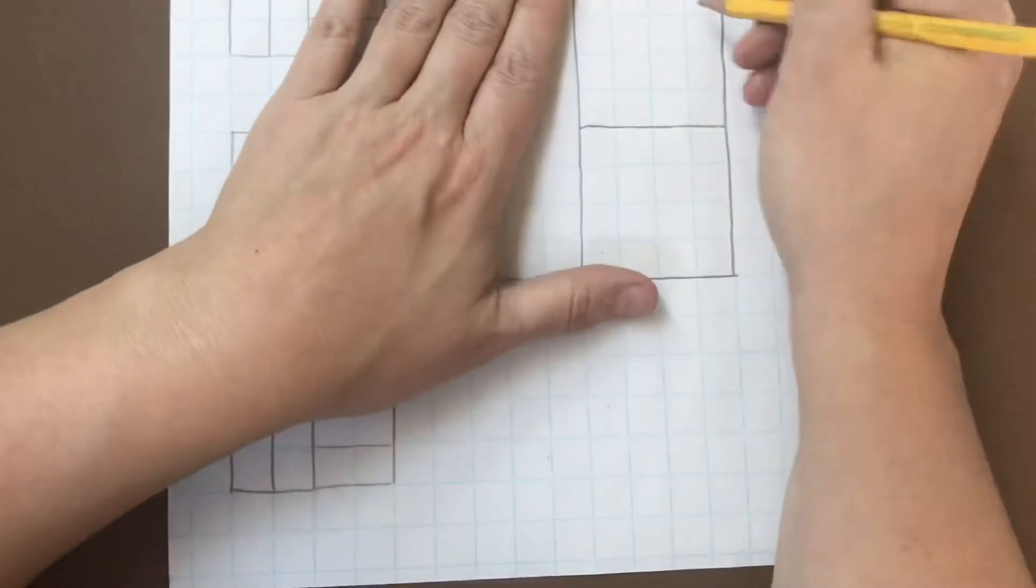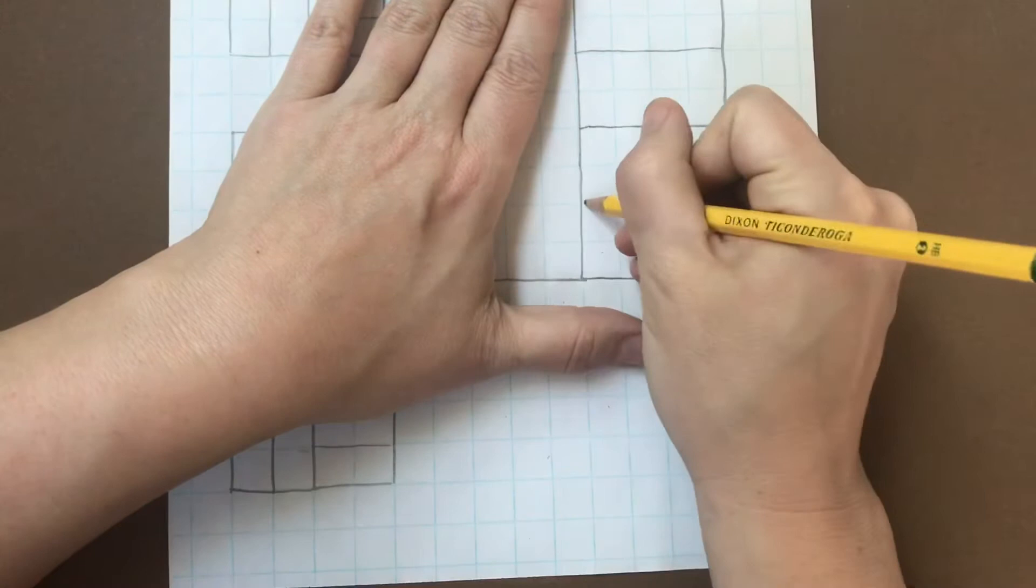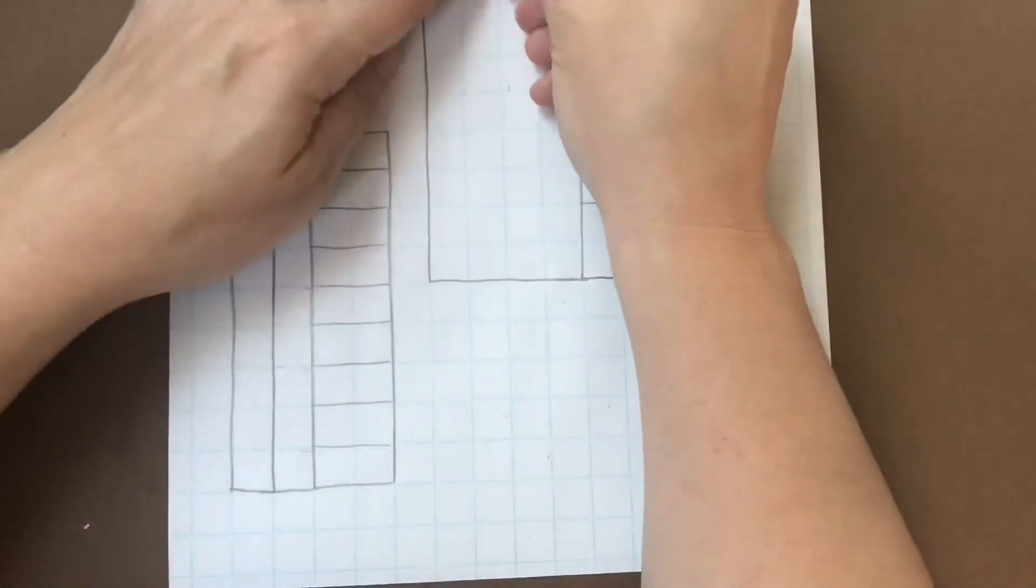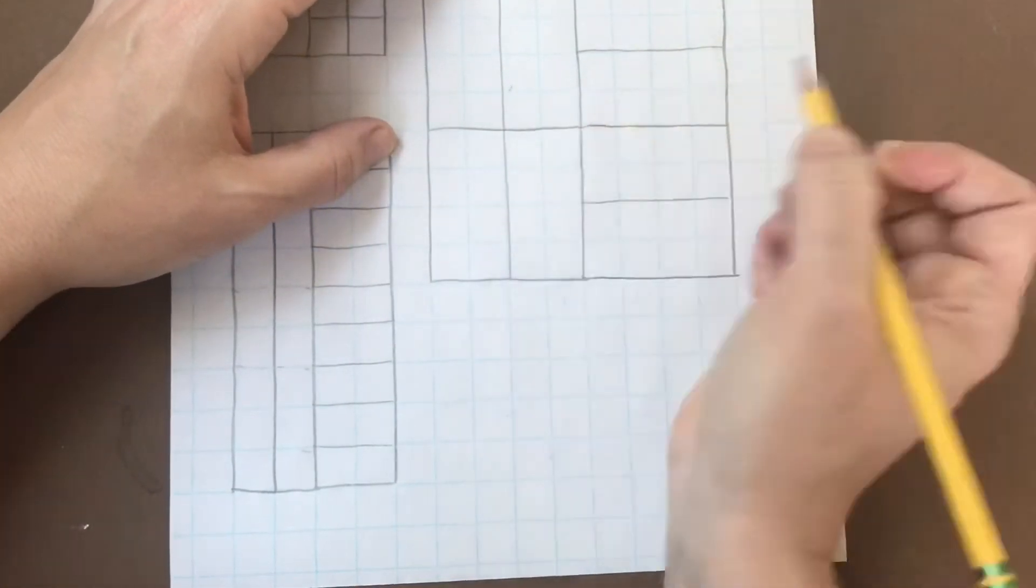I can divide the first one however I like into equal parts. And then the second rectangle I divide also into equal parts.